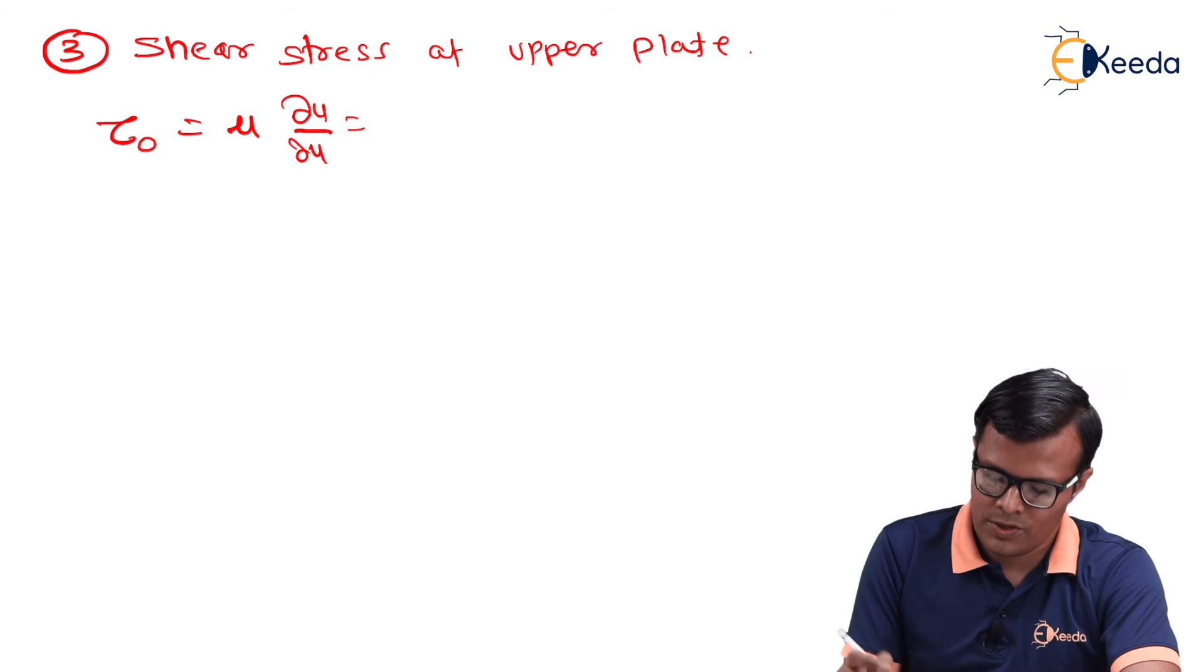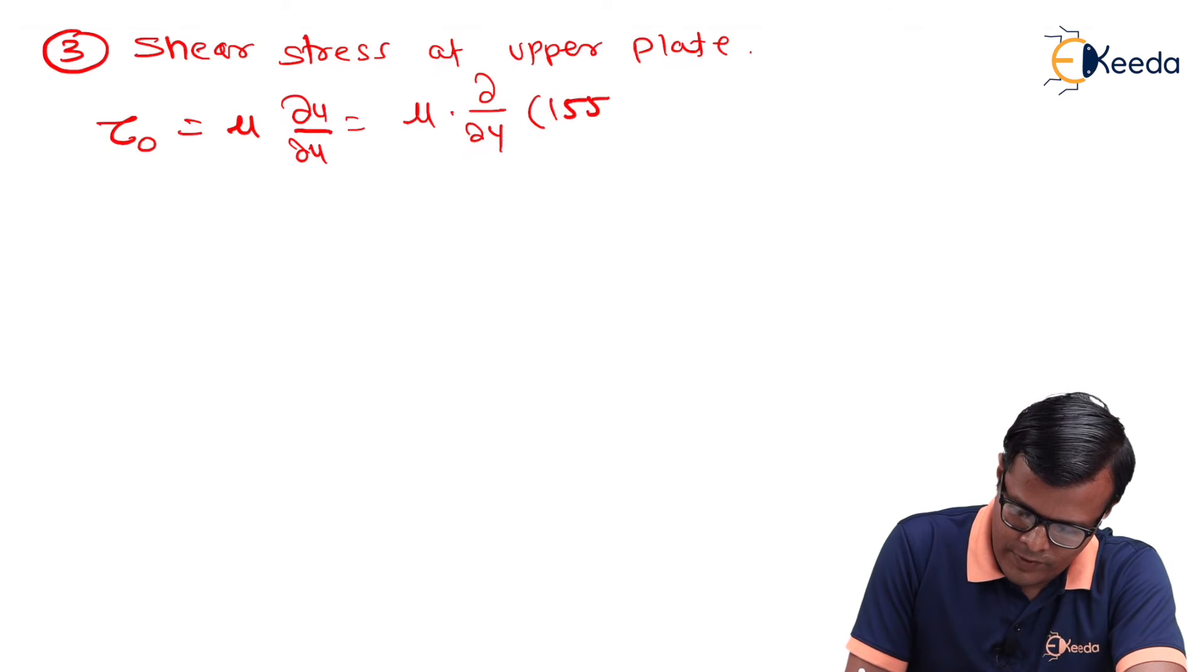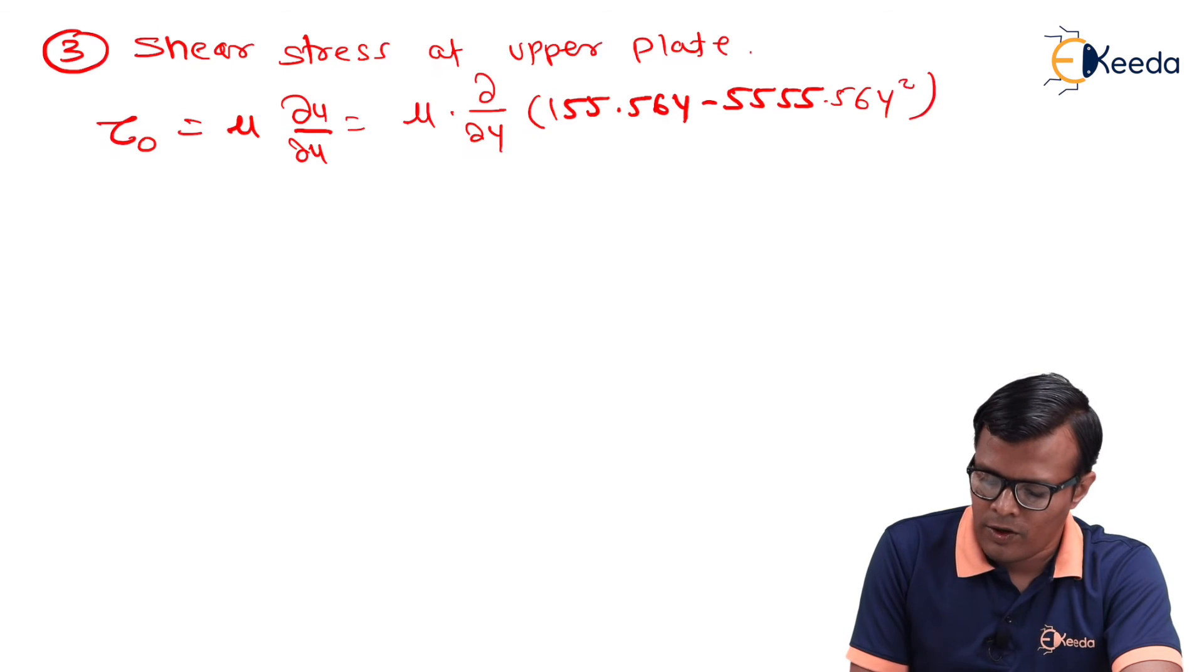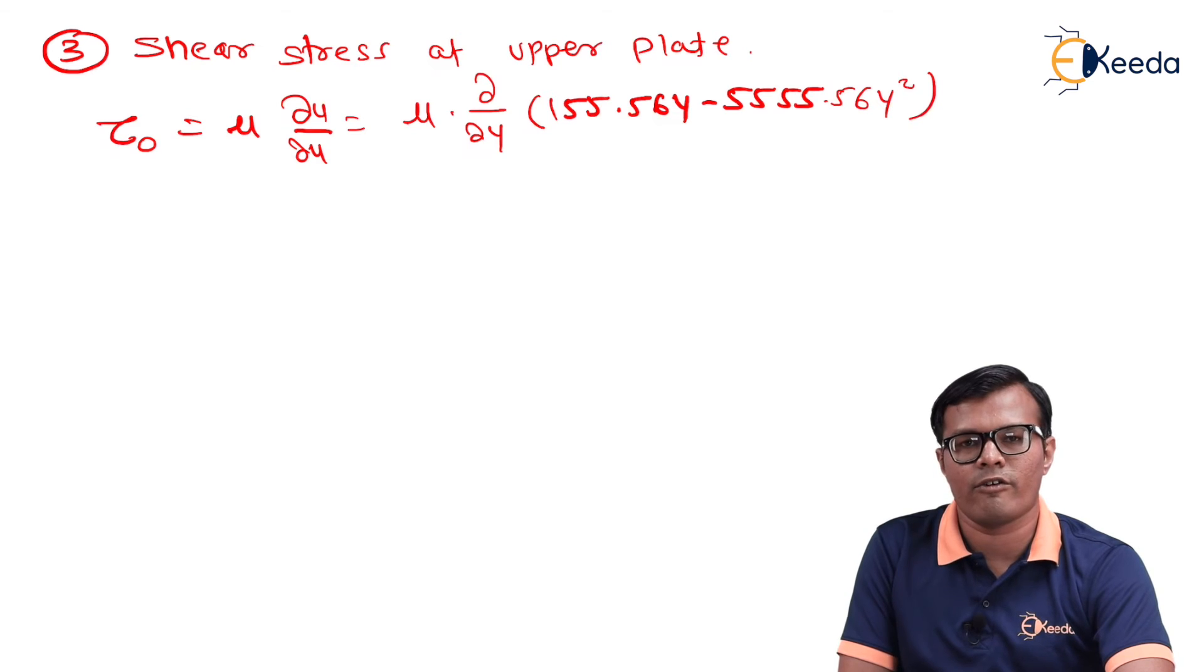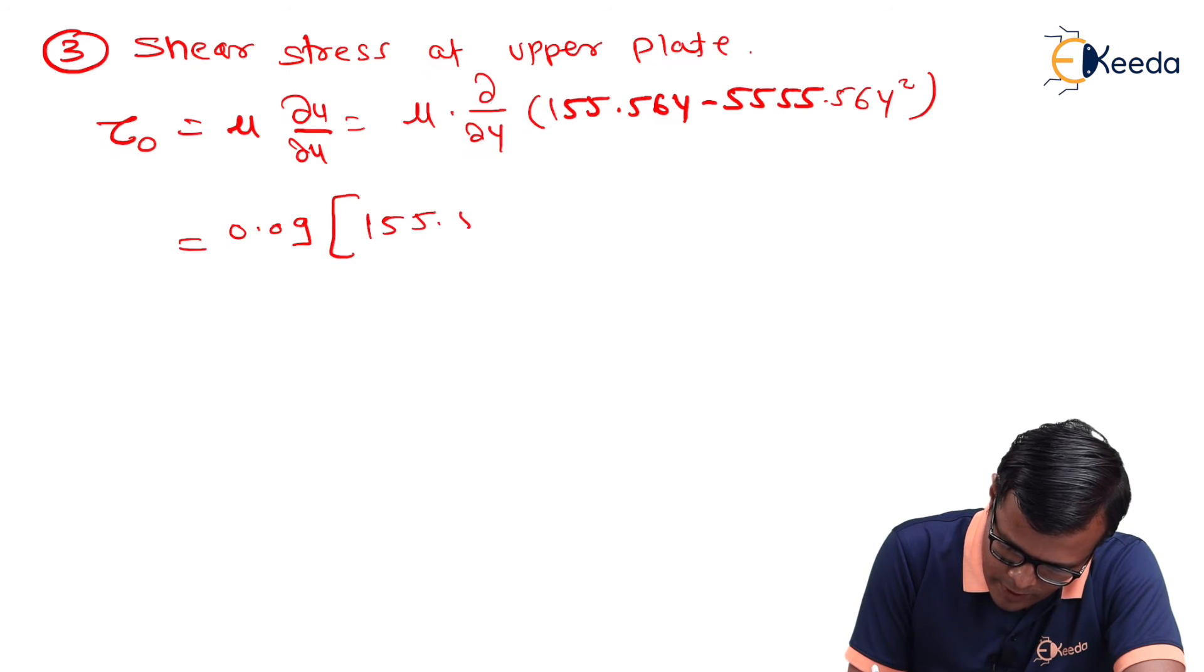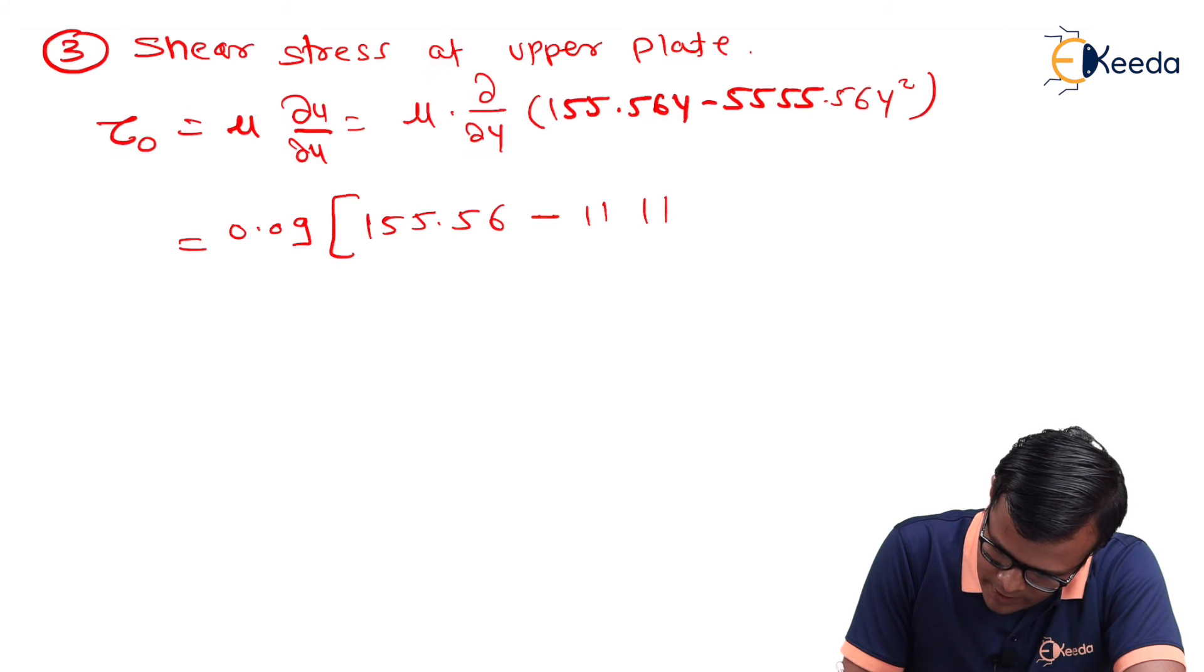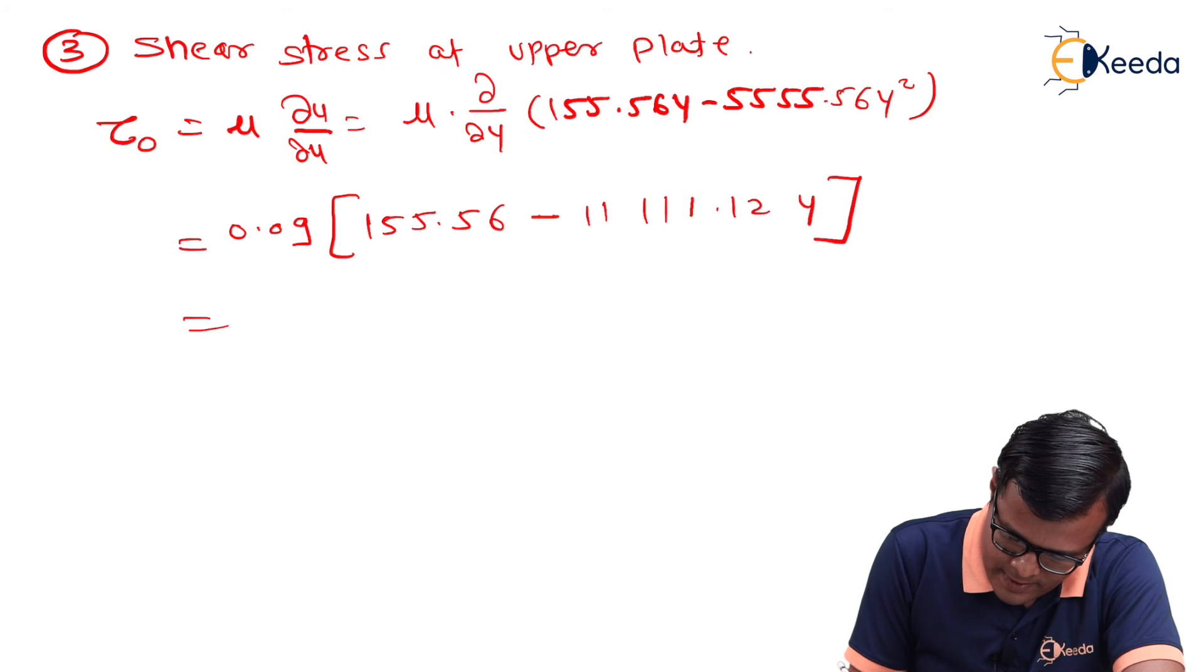Here relation of u is known to us, so μ times derivative of the value of u can be written in terms of y as 155.56y - 5555.56y². Now it is easy for us to calculate derivative of y with respect to y. y derivative becomes constant itself and y² derivative becomes 2y. So, value of μ is 0.09, this 155.56 minus 2 × 5555 becomes 11,111.12y.